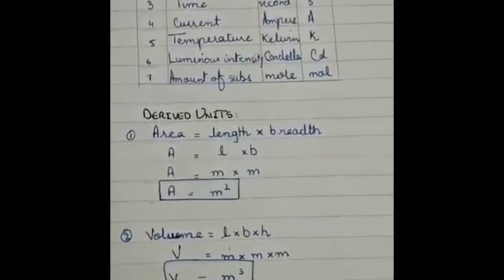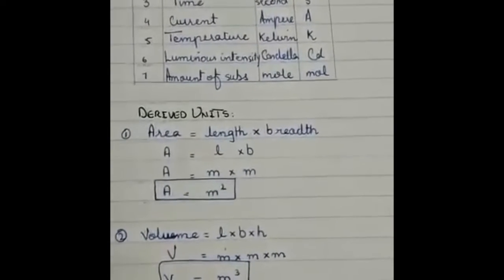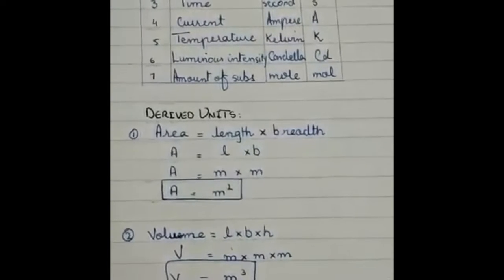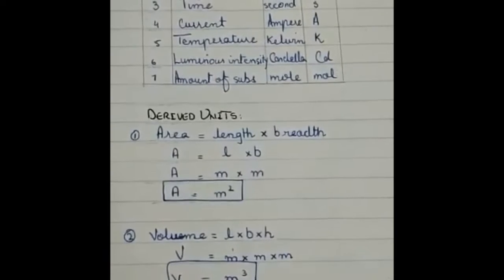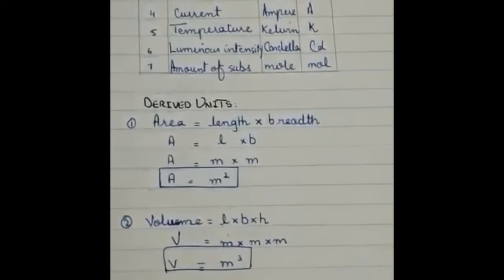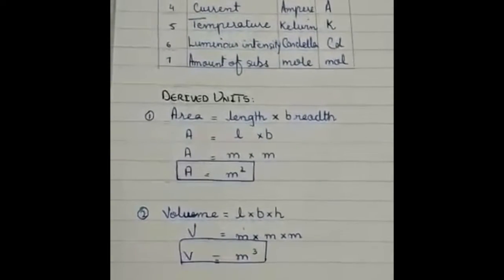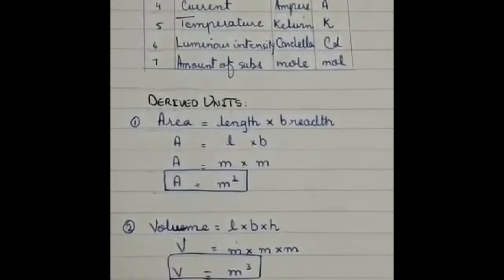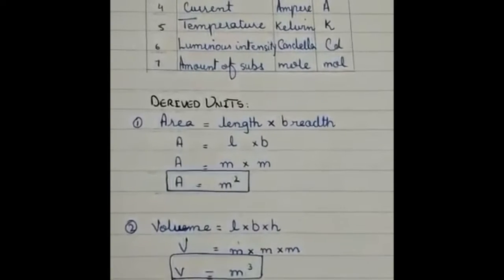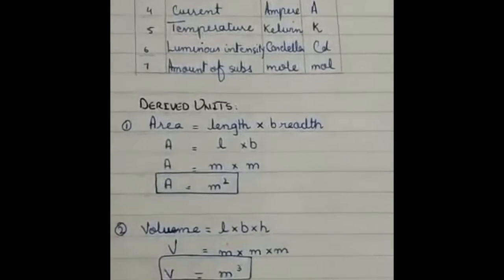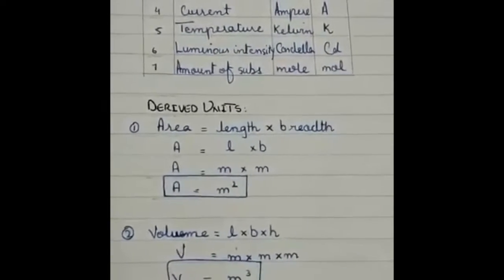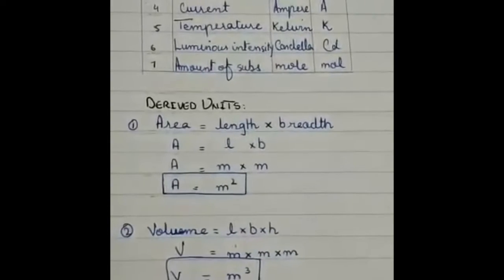Of course there are lot more units than these seven basic units and therefore they are called as derived units which come from these basic units. The derived units are number one, area which is length into breadth, that is area equals to meter square. Number two, volume, that is length into breadth into height which is meter cube.